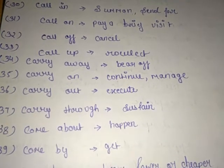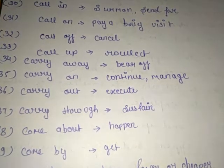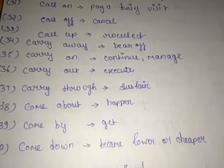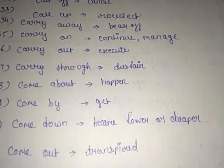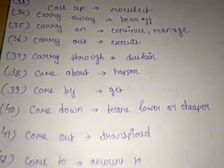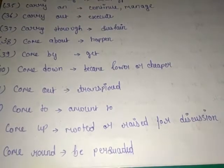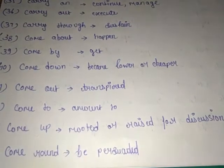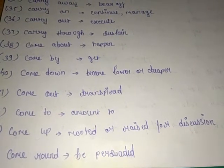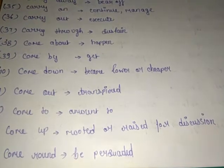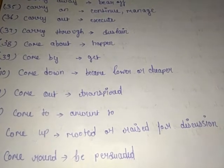Come about means to happen. Come by means to get. Come down become lower or cheaper. Come out is transpired. Come to means amount to. Come up means raised for discussion. Come around, be persuaded.